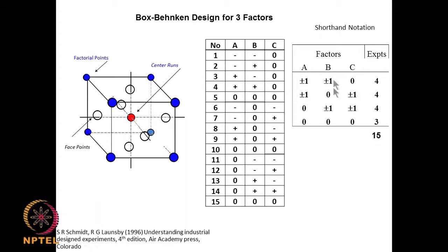This is called the shorthand notation and the normal form we are used to. When we talk about say ±, ±, ± for A, B, and C = 0, this corresponds exactly to those experiments. The first 4 experiments are A going both plus or minus, B going both plus or minus, and C going 0, and the 5th experiment is 0, 0, 0 — the central point. We have 3 places where experiments are done at the central point, adding up to 15 experiments.